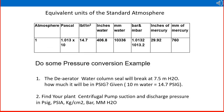Equivalent units of standard atmosphere: one atmosphere equals approximately 101,325 Pa (Pascal), 14.7 psi (pounds per square inch), and can also be expressed in inches of water, bar (approximately 1 bar), approximately 30 inches of mercury, and 760 millimeters of mercury. These are various units representing the same standard atmospheric pressure.